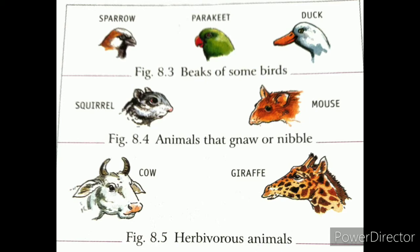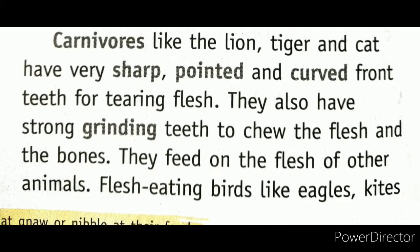The next type of animals are herbivores. After herbivores, the next type are carnivores. In carnivore feeding habits, carnivore animals like lion, tiger, and cat eat the flesh of other animals. This is why their teeth are sharp, pointed, and curved so they can tear the flesh.